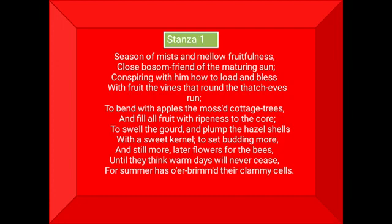Now we come to the original text of the poem. Stanza first: Season of mists and mellow fruitfulness, close bosom-friend of the maturing sun, conspiring with him how to load and bless with fruit the vines that round the thatch-eaves run, to bend with apples the mossed cottage-trees and fill all fruit with ripeness to the core, to swell the gourd and plump the hazel shells with a sweet kernel, to set budding more, and still more later flowers for the bees, until they think warm days will never cease, for summer has o'erbrimmed their clammy cells.